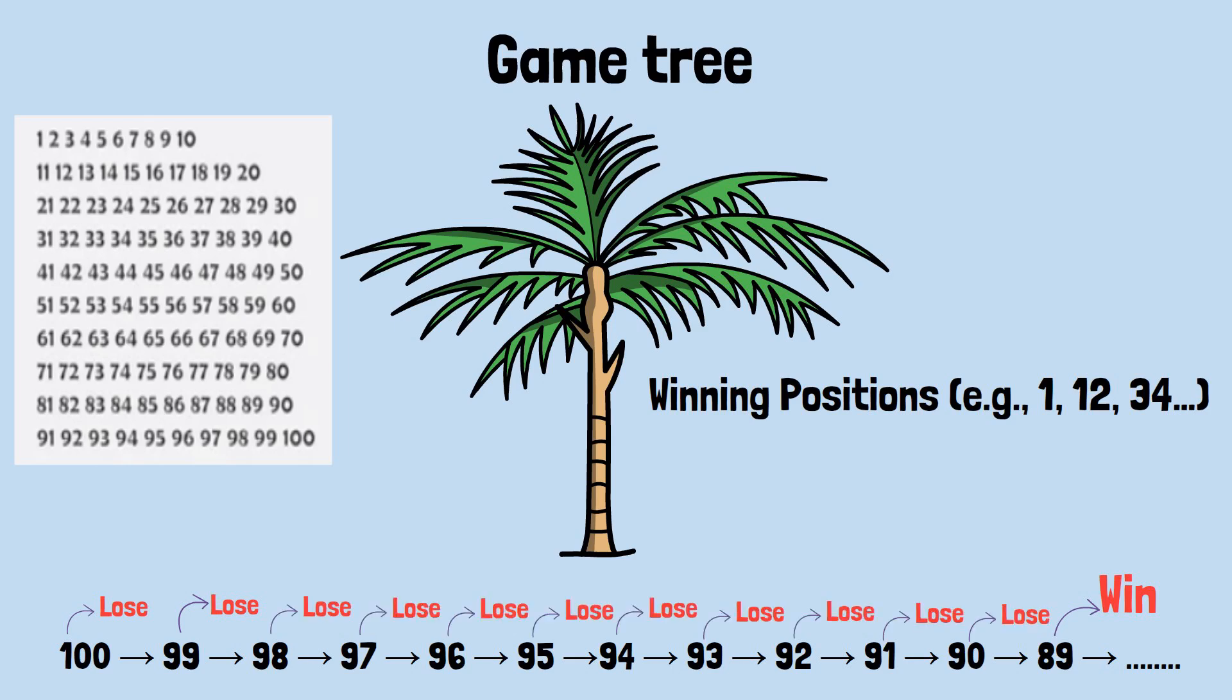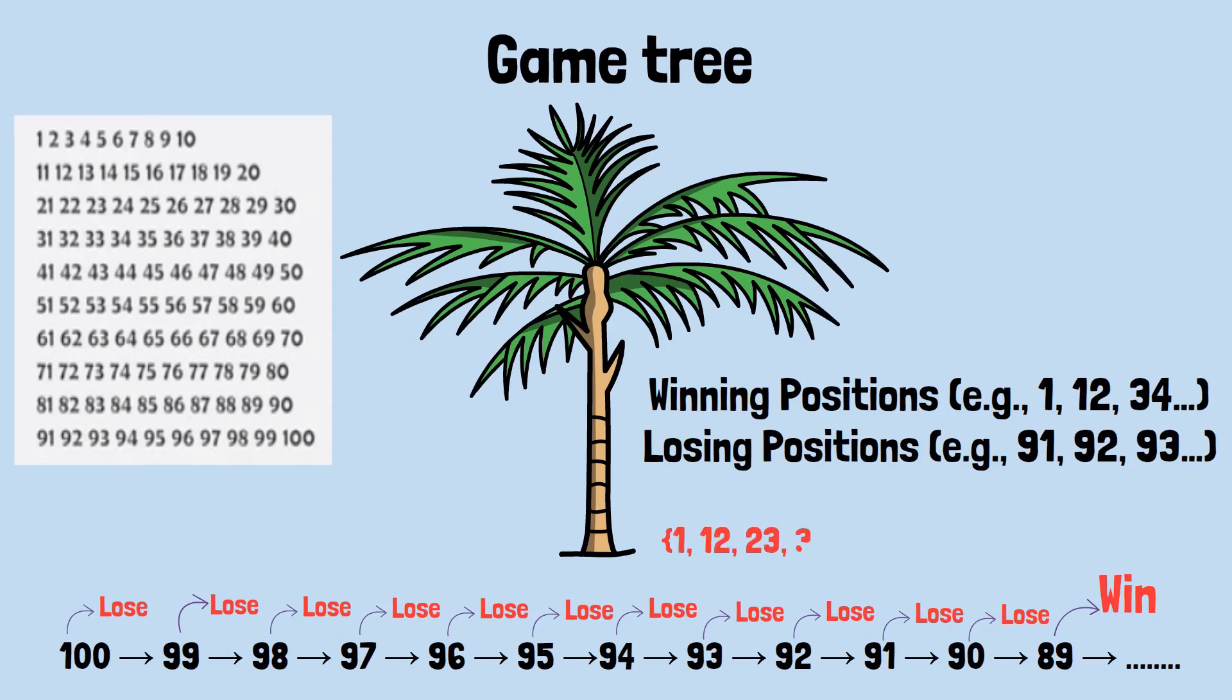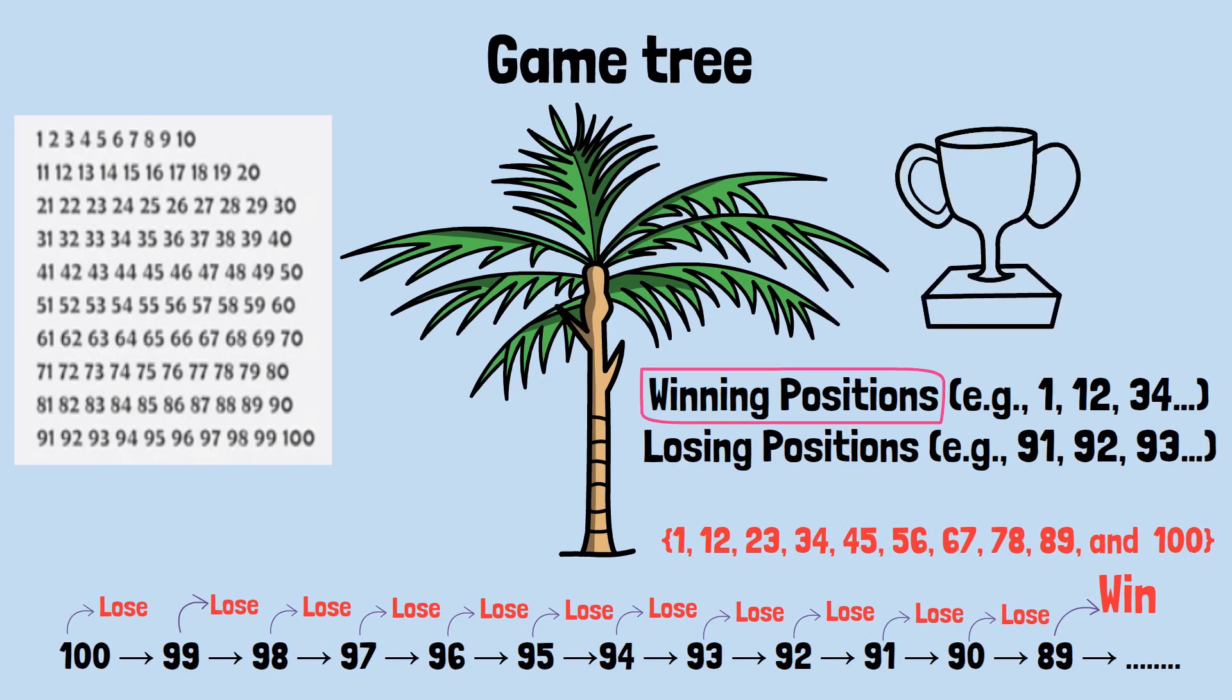The arithmetic sequence 1, 12, 23, 34, 45, 56, 67, 78, 89, 100 represents precisely these winning positions. If you can reach any of these numbers, you can force your way to the next one, and ultimately to victory.